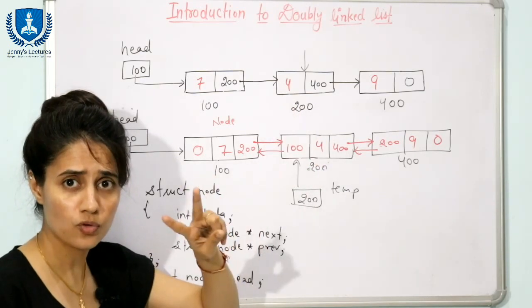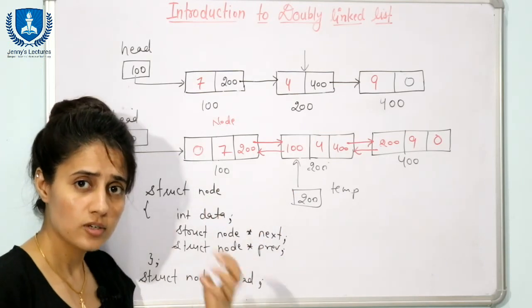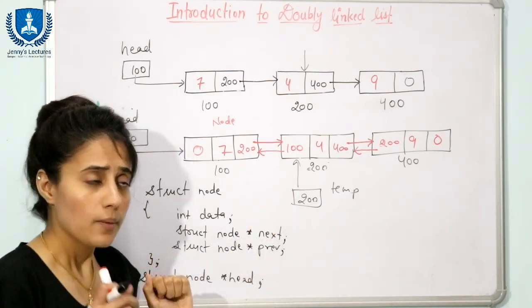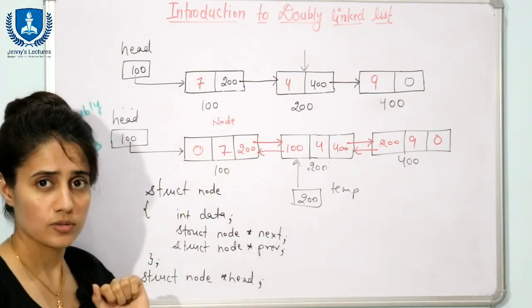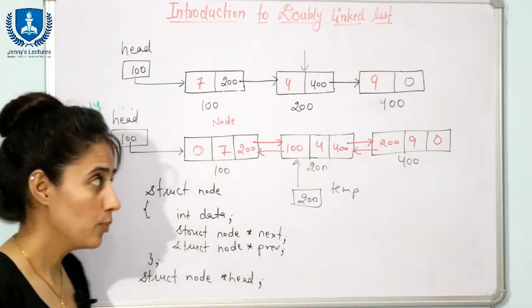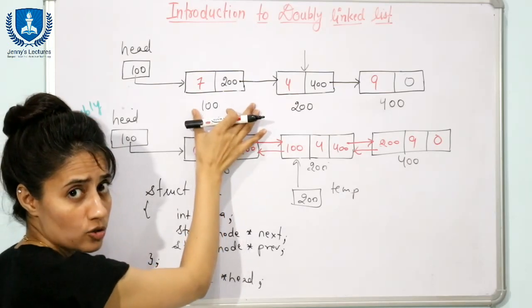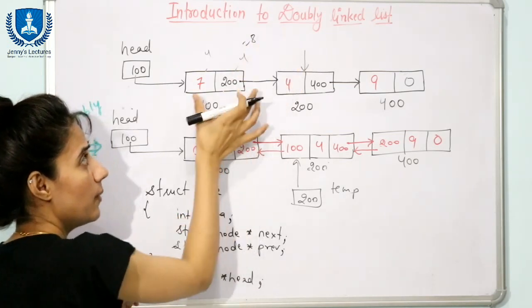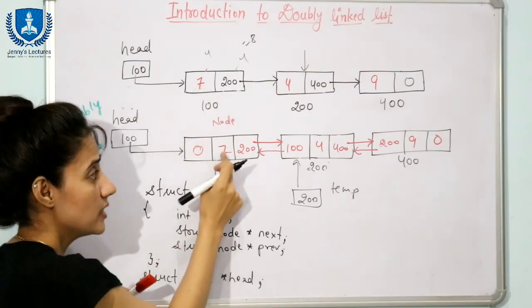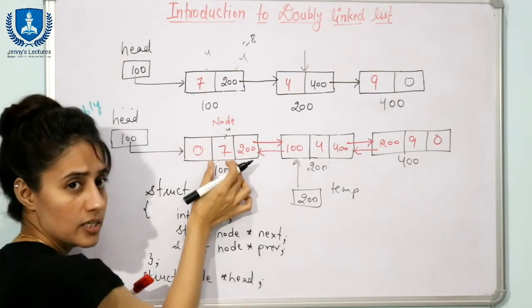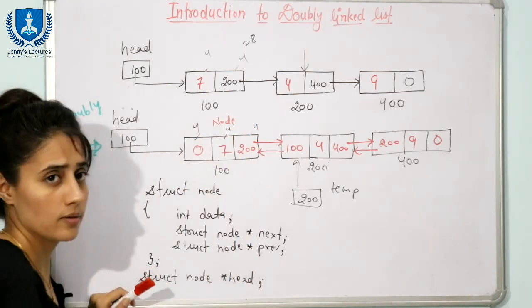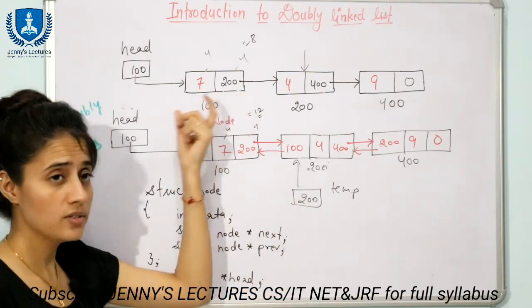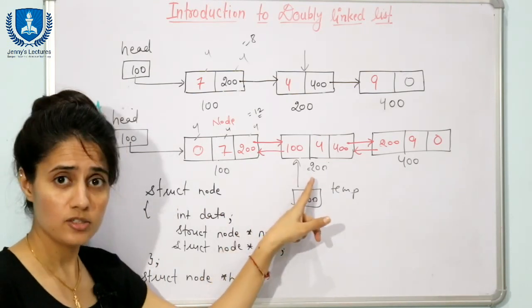In a doubly linked list, deletion is easy — only one pointer is enough to delete a node. In a singly linked list, you have to maintain two pointers. Insertion is also easier in a doubly linked list. However, one drawback is extra memory usage: a singly linked list node requires four bytes for data and four bytes for one pointer — eight bytes total — while a doubly linked list node requires four bytes for data and four bytes each for two pointers — twelve bytes total.